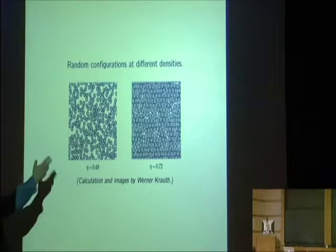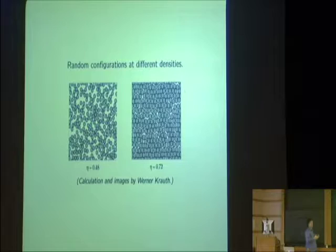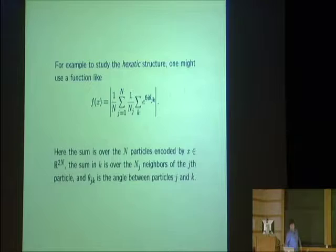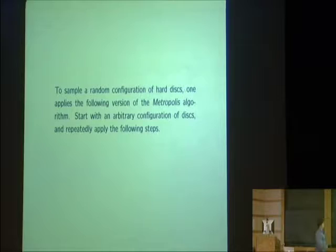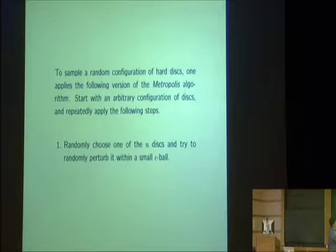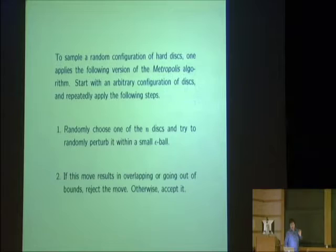Instead you start with an arbitrary configuration — the ergodic hypothesis says it doesn't matter where you start — and take a random walk on the space. Markov chain Monte Carlo is ubiquitous in probability for exactly this sort of thing. I highly recommend Percy Diaconis's survey article, 'Markov Chain Monte Carlo Revolution,' which has a nice section about the hard disks setting. Start with a lattice configuration, pick one of the N disks and perturb it within a small epsilon neighborhood. If it results in overlap or going out of bounds, reject the move; otherwise accept it. This provably converges to the stationary distribution as the number of steps goes to infinity.